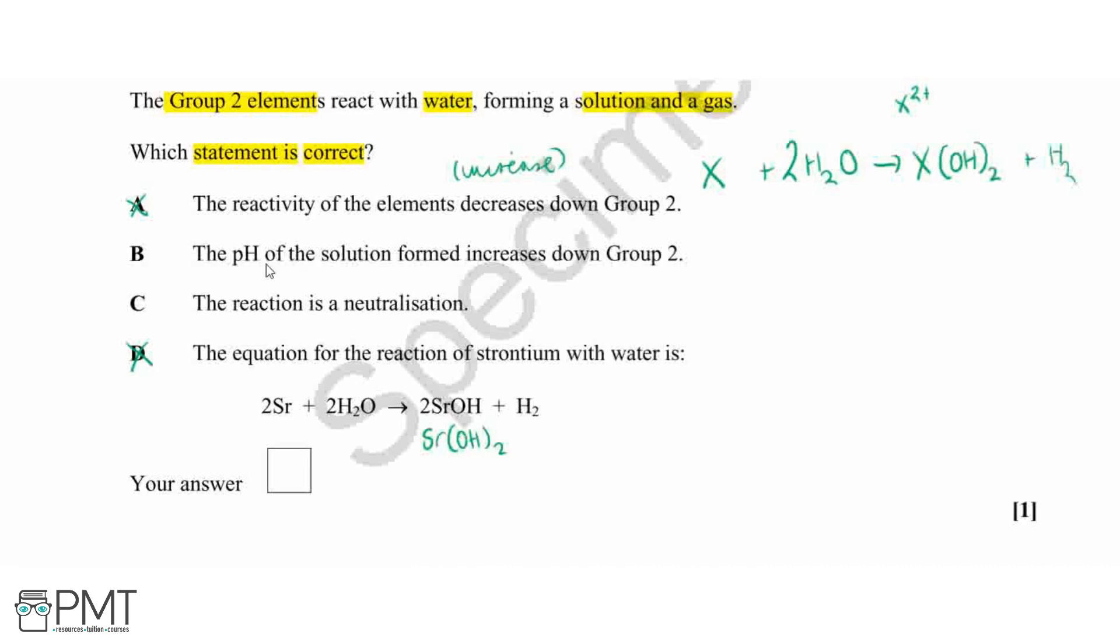The reaction is not a neutralization because we haven't got an acid reacting with a base, so we don't have a proton donor and a proton acceptor. Actually this reaction is a redox reaction where we have a change in oxidation numbers for our element from group 2 and for our hydrogen. So it's not a neutralization.